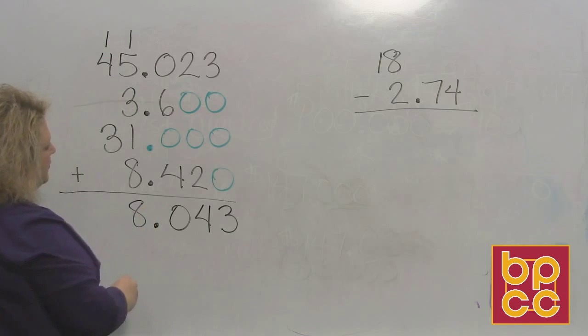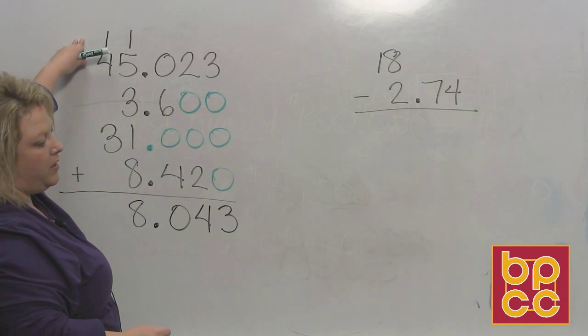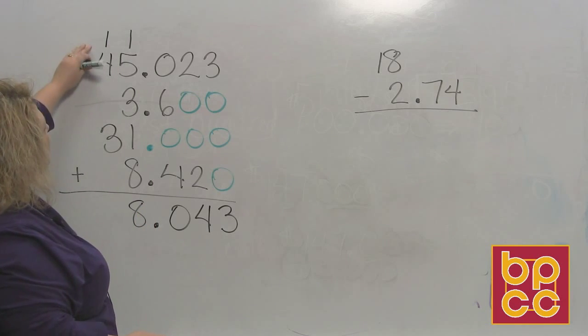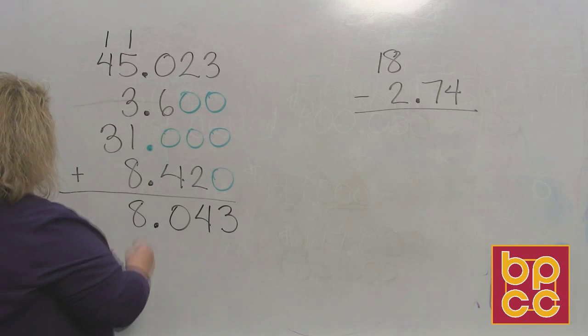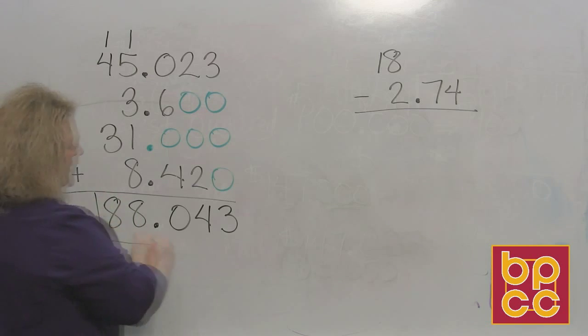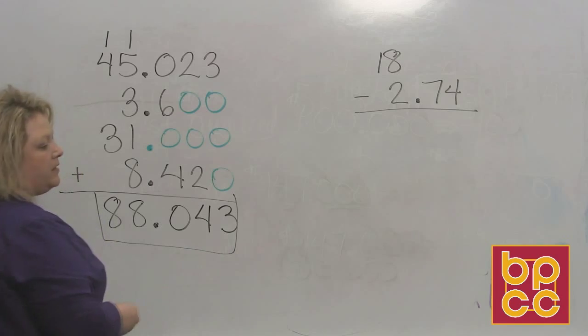So we put that ones place down there and we carry that other one up. And then we do this again. One plus four makes five. Five plus three makes eight. So our final answer is eighty eight and forty three thousandths.